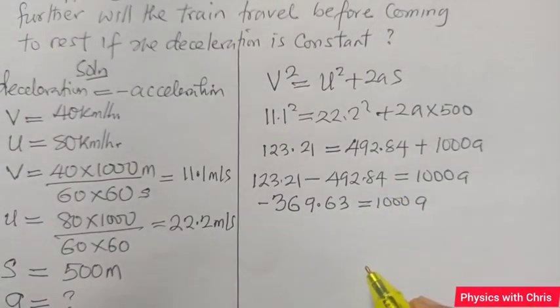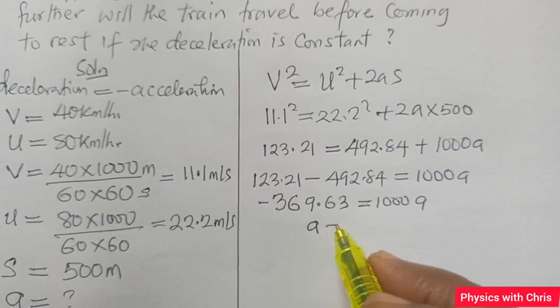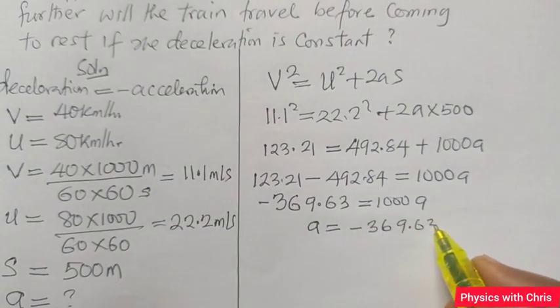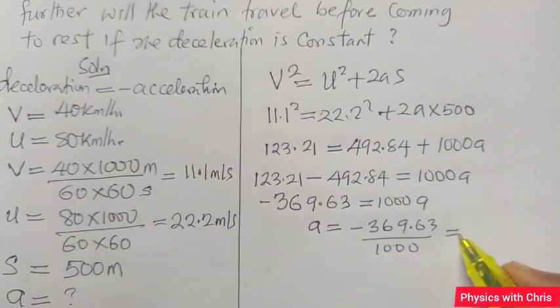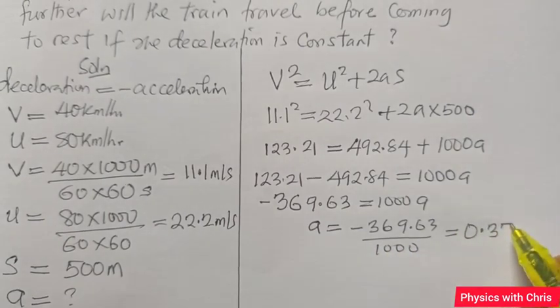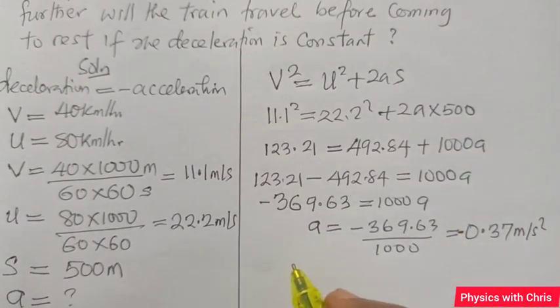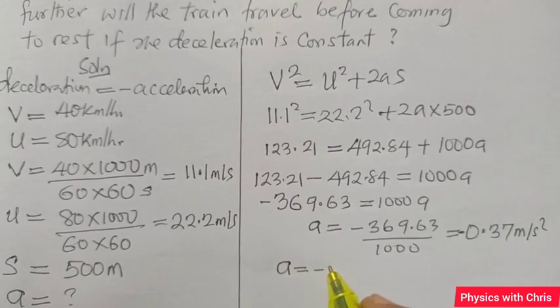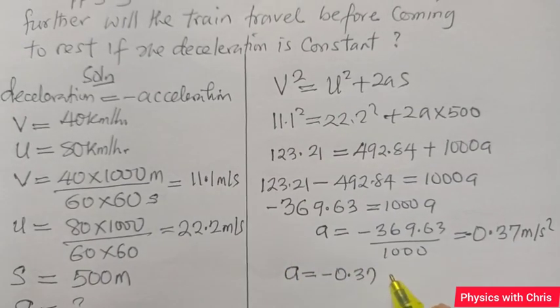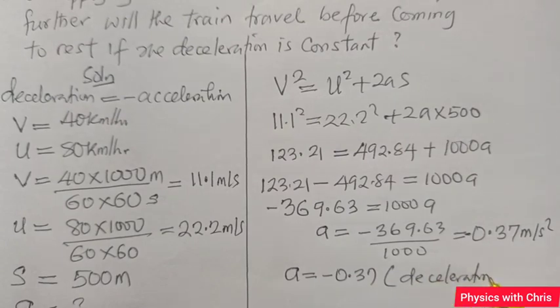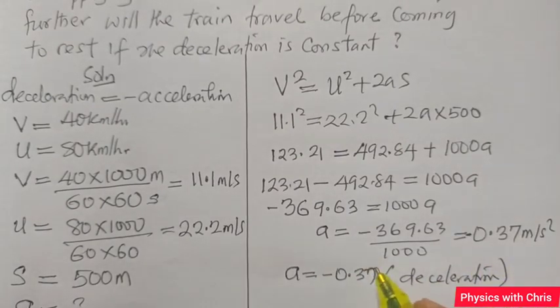We have a negative result for our acceleration. That should not scare you. Dividing by 1000 gives me -0.37 meters per second squared approximately. The negative result shows that the acceleration is negative 0.37, which means deceleration. Negative acceleration is deceleration.